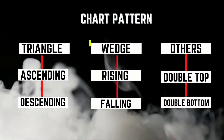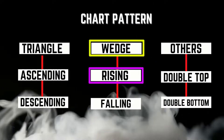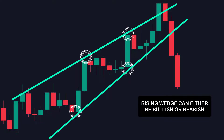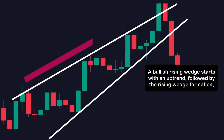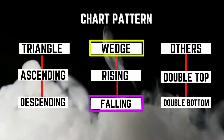Moving on to the wedge pattern. A rising wedge can be both bullish and bearish. A rising wedge pattern forms when the price is making higher highs and higher lows, which allows for a rising trendline to be placed at both the top and the bottom. A bullish rising wedge starts with an uptrend followed by the rising wedge formation, while a bearish rising wedge starts with a downtrend followed by the pattern formation.